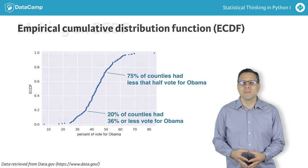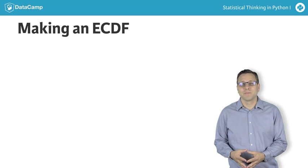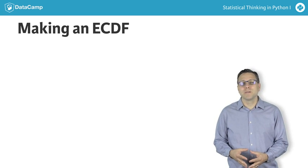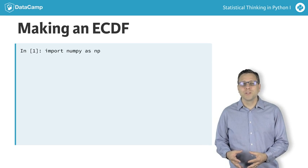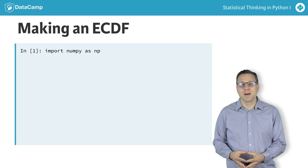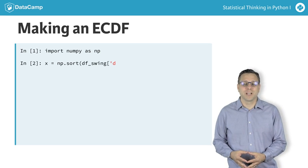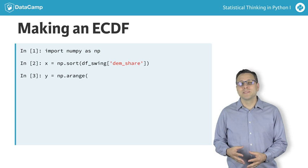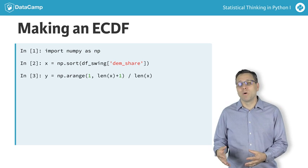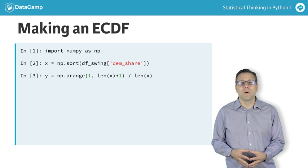Let's look at how to make one of these from our data. The X axis is the sorted data. We need to generate it using the NumPy function sort, so we need to import NumPy, which we do using the alias np, as is commonly done. Then we can use np.sort to generate our X data. The Y axis is evenly spaced data points with a maximum of 1, which we can generate using the np.arange function.